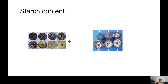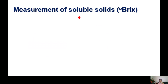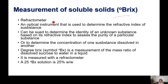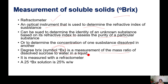Looking at the starch content for mature and immature apples, initially starch is present but in later stages there is no more starch and it is completely sugar. These are the various patterns of starch content. Soluble solids, or degree Brix, measured with a refractometer, is most commonly used. The refractometer is an optical instrument used to determine the refractive index of a substance, to determine the quantity or identity of an unknown substance, and to determine the concentration of one substance dissolved in another. Degree Brix is a measurement of the mass ratio of dissolved sucrose to water in a liquid.